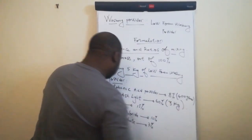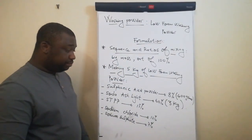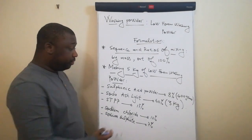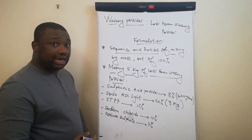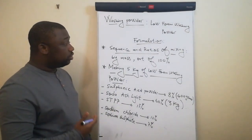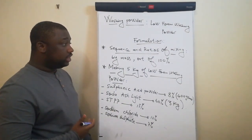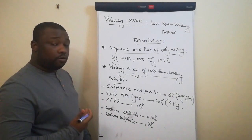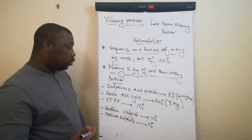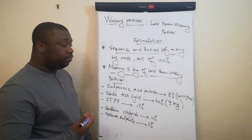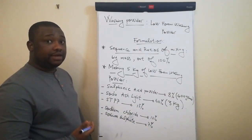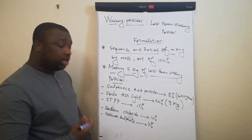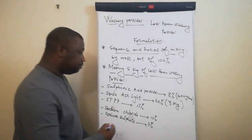The next ingredient is STPP. This should be 15% of the total mass. Out of the 5 kg of low foam washing powder that we're manufacturing, we're going to need 750 grams of STPP.